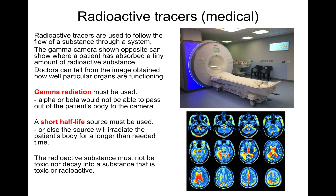When performing a medical tracer procedure, a short half-life source must be used. It cannot be too short - for example, 10 minutes would mean within 50 minutes it is completely gone. Approximately six hours is typical, meaning it takes about 30 hours for the radiation to decay to background levels. A short half-life source must be used or else the source will irradiate the patient's body for longer than needed. The radioactive substance must also not be toxic, nor decay into a substance that is toxic or radioactive.